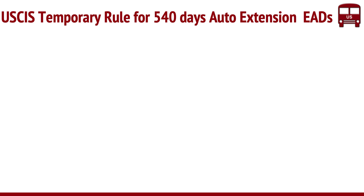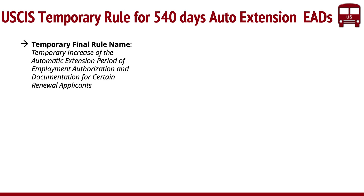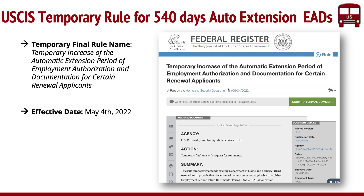Now, how does this rule work? The rule is actually called a temporary rule — it's going to be taken out after some time, it's not a permanent regulation. The title is: 'Temporary increase of automatic extension period of employment authorization and documentation for certain renewal applicants.' The effective date is May 4th, and this is how it looks in the Federal Register.